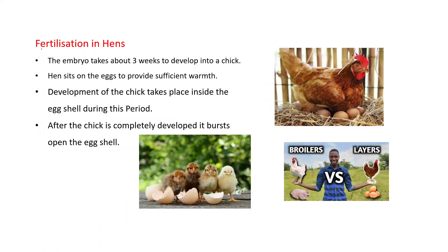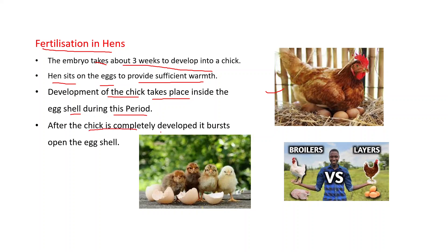Continuing with fertilization in hens: the embryo takes about three weeks to develop into a chick. The hen sits on the eggs to provide sufficient warmth — that is, heat. Development of the chick takes place inside the egg during this period. After the chick is completely developed, it presses open the eggshell.